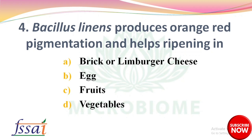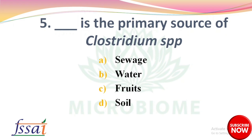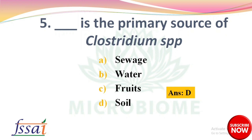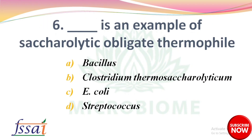Next: Bacillus linens produces orange-red pigmentation and helps ripening in — options: brick Arlene burger cheese, egg, fruits, vegetables. The right answer is option A, brick Arlene burger cheese. Next: Dash is the primary source of Clostridium species — options: sewage, water, fruits, soil. The right answer is option D, soil.